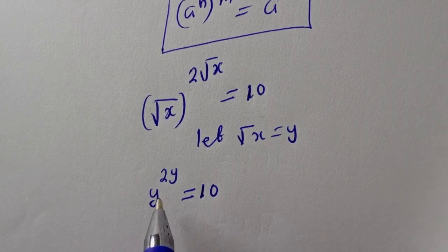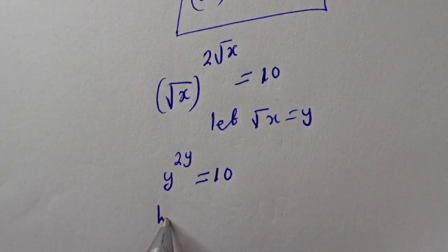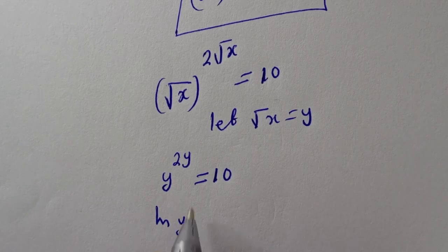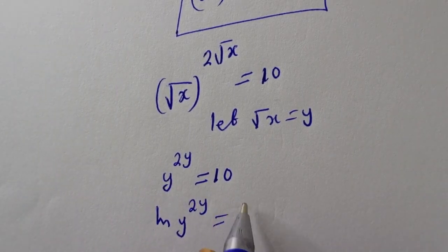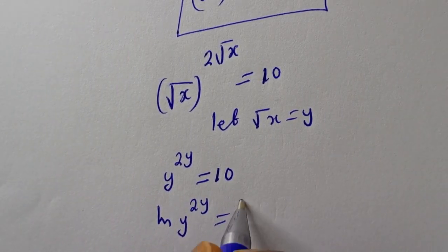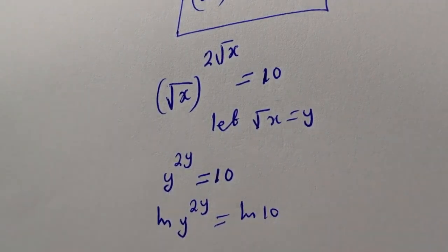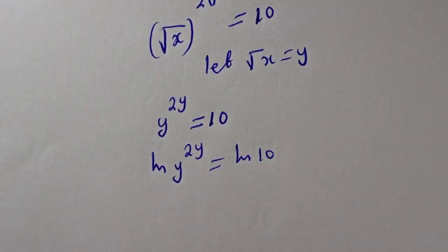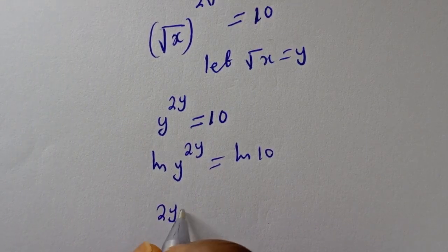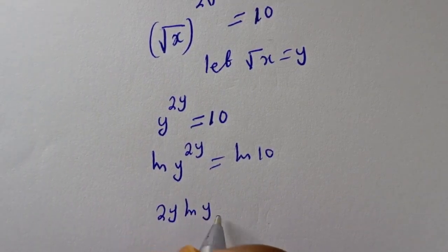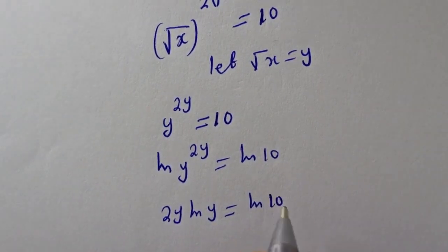Let's take the natural log of both sides. We have ln of y to the power of 2y is equal to ln of 10. Then this becomes 2y times ln of y is equal to ln of 10.